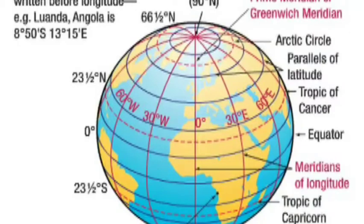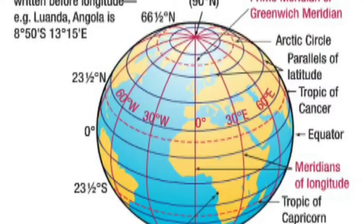If you look at the equator, the North Pole is at 90 degrees North and the South Pole is at 90 degrees South. The upper portion above the equator is the Northern Hemisphere, and the lower portion is the Southern Hemisphere.